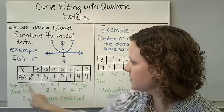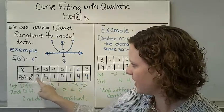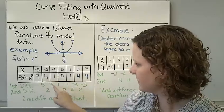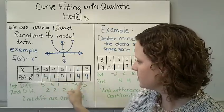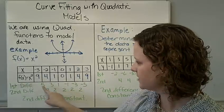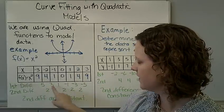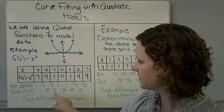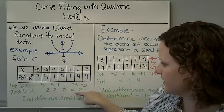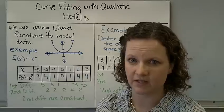If I do the first differences between the f(x)'s: 9 minus 4 is 5, 4 minus 1 is 3, etc. — those are not constant. If I do the second differences: 5 minus 3 is 2, 3 minus 1 is 2, etc. Once those second differences are the same, then it is a quadratic function.